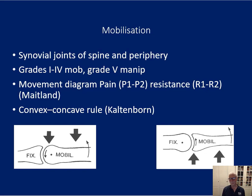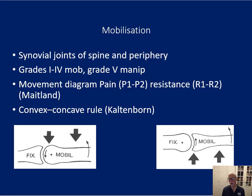From Kaltenborn we have the convex-concave rule, a principle based on joint mechanics: if one bone has a round end and the other has a hollow end, they will move in different directions depending on which you move first. Nowadays we would call this an order effect. It was useful to guide movements — do the joint surfaces move in the same direction or in opposite directions? However, when examined through the magnifying glass of research, these principles don't hold water.